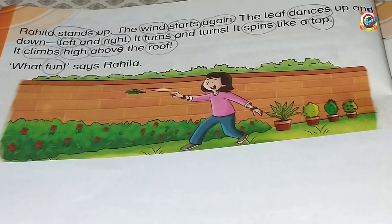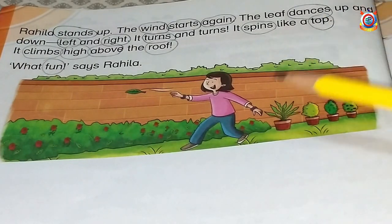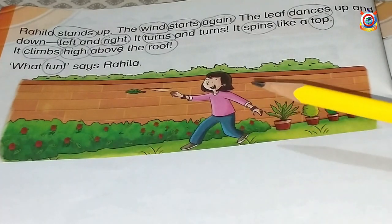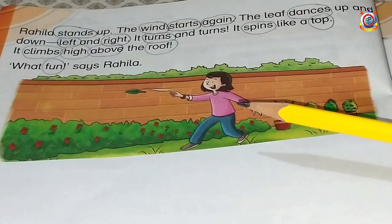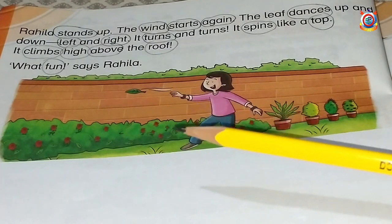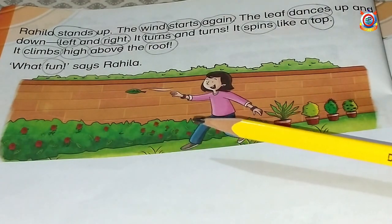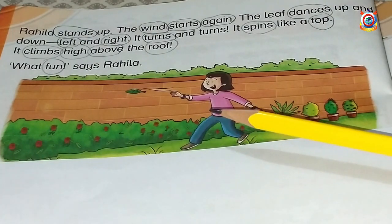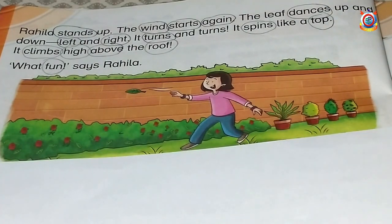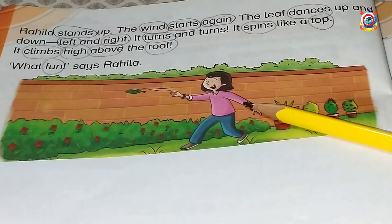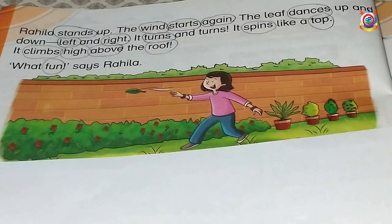In the next class, we studied that Rahila stands up and the wind starts again. The leaf dances up and down, left and right. It turns and turns — it spins like a top. And Rahila says, 'What fun!' Rahila is happy. Now let's see what happened next in the story.